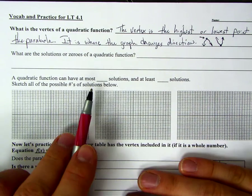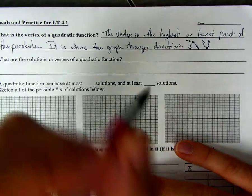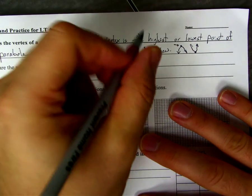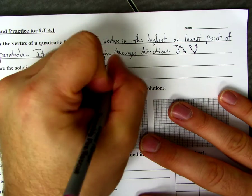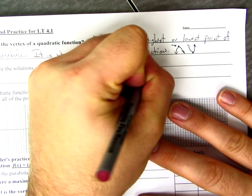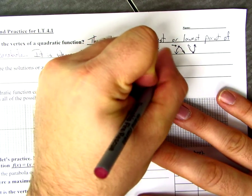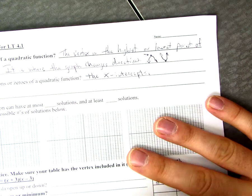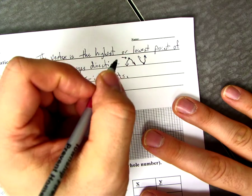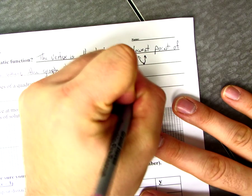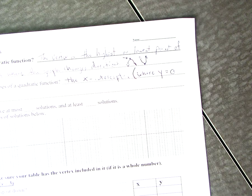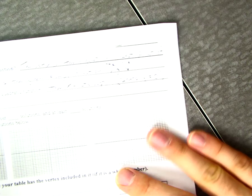So the next thing we're going to talk about is what are the solutions or zeros of a quadratic function. All right, now if you remember this from previous stuff in math courses, the solutions or zeros are the x-intercepts. And like we're talking about, if you remember this from previous lessons, you'll remember that the x-intercepts are where y equals zero.